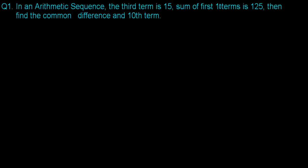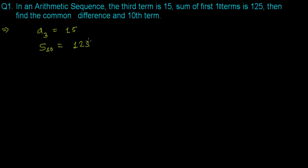As I mentioned in the previous videos, we always need to start by writing the given information first. In our arithmetic sequence, the third term — I'm representing it as a3 — is given as 15. In many books or by some teachers it may be written as t3, but that's the same thing. The sum of the first 10 terms, represented as S10, is given as 125. The question asks for the common difference d and the 10th term a10.